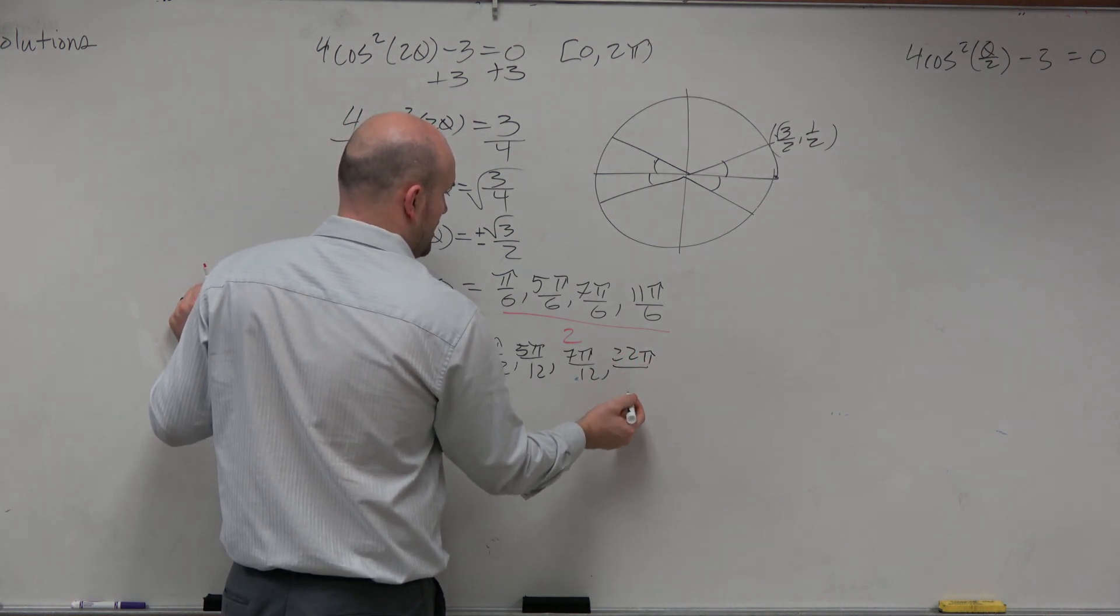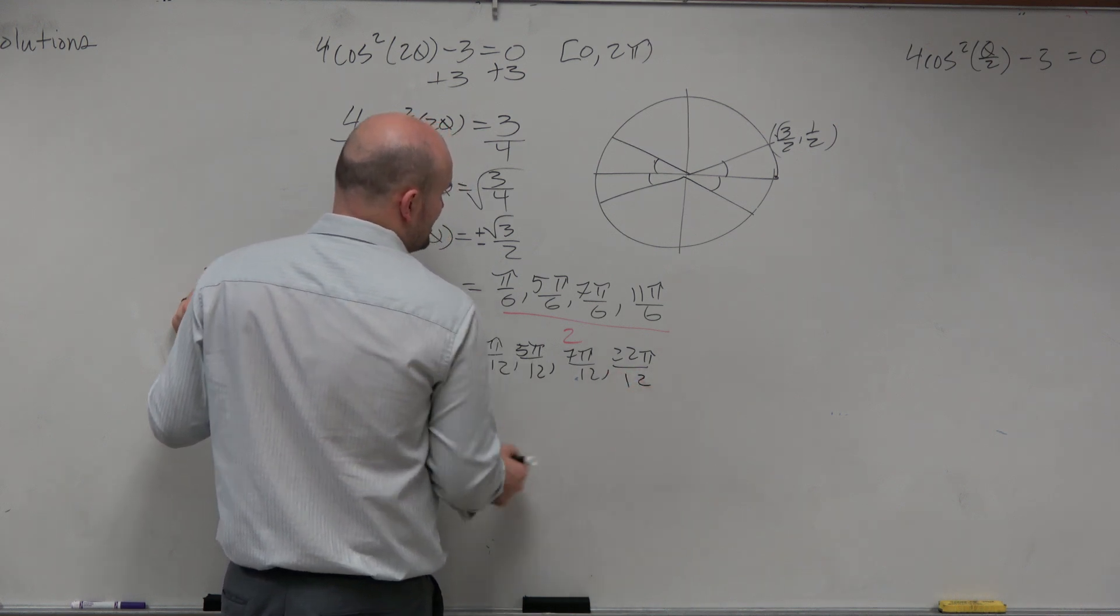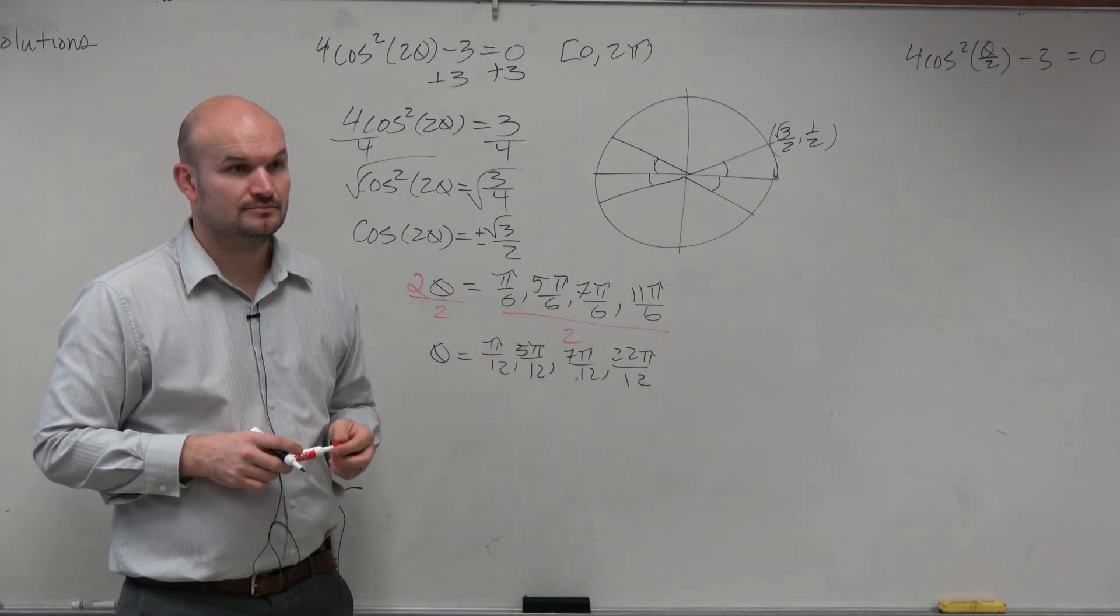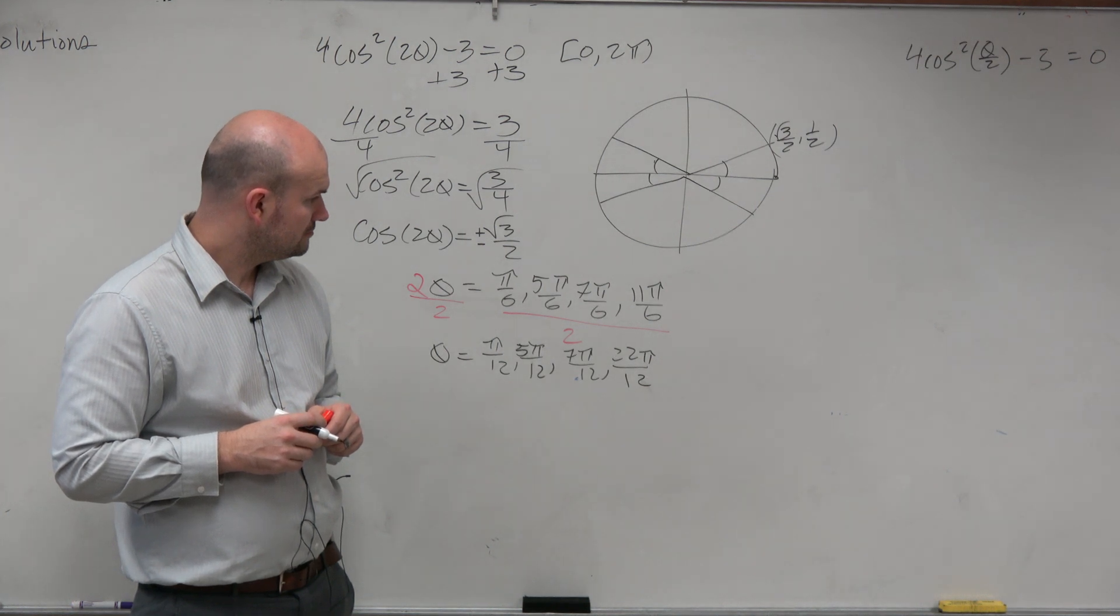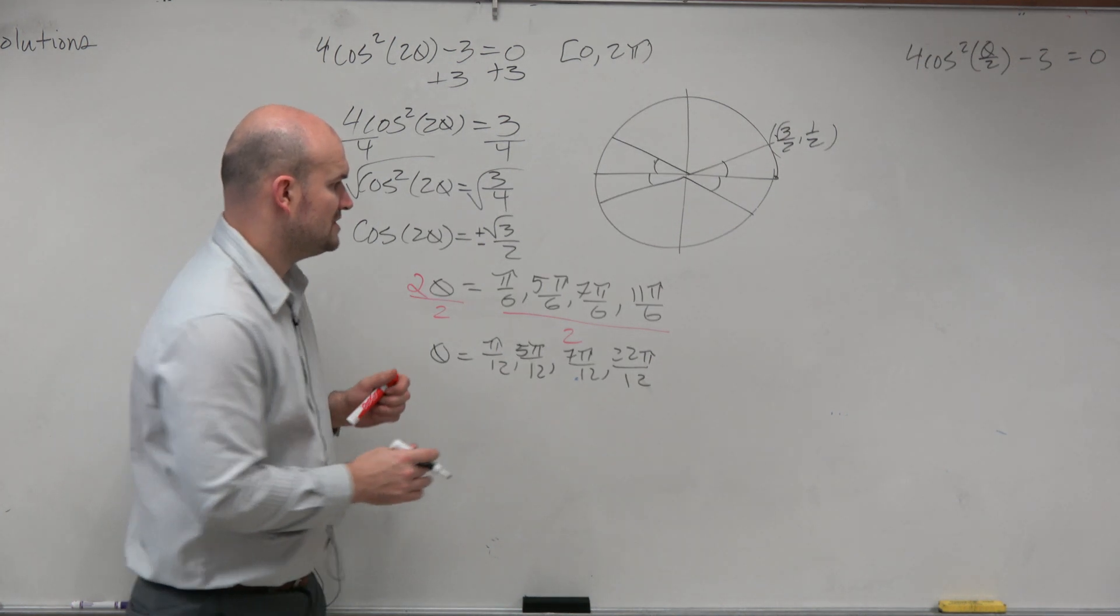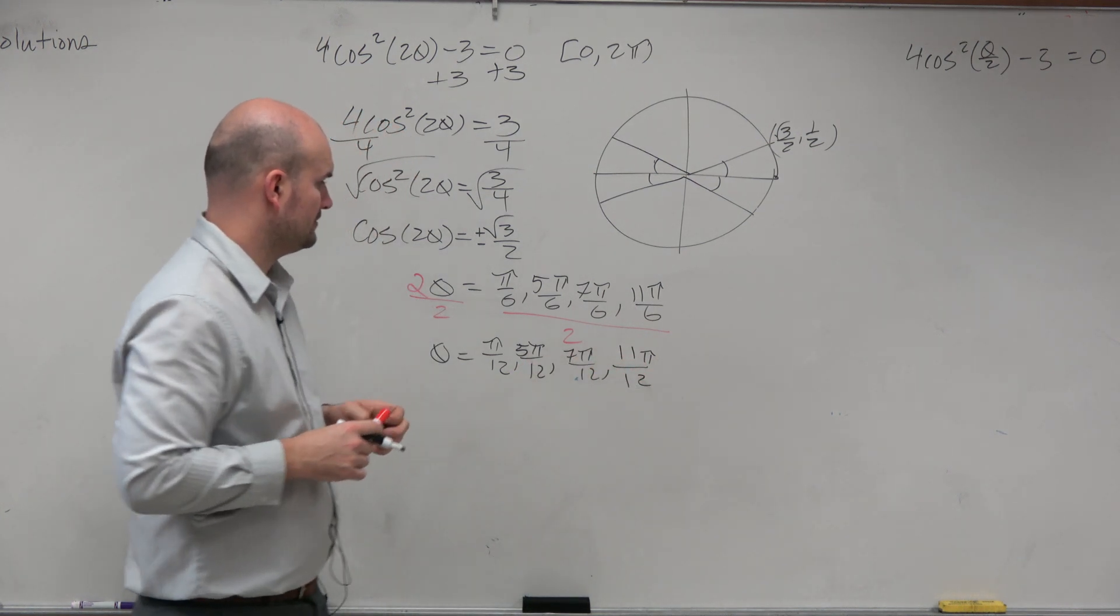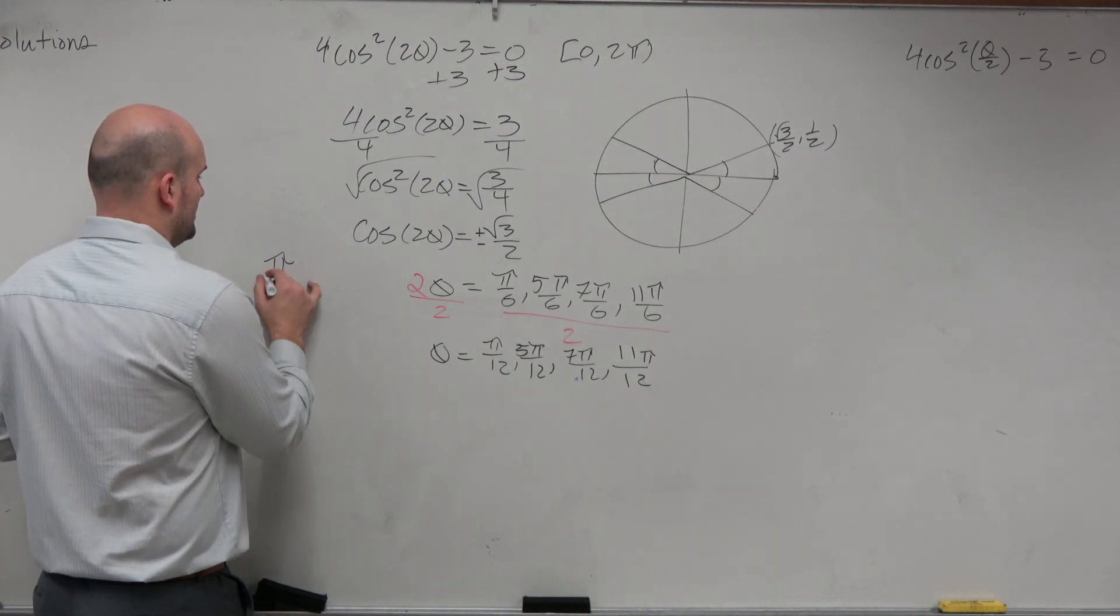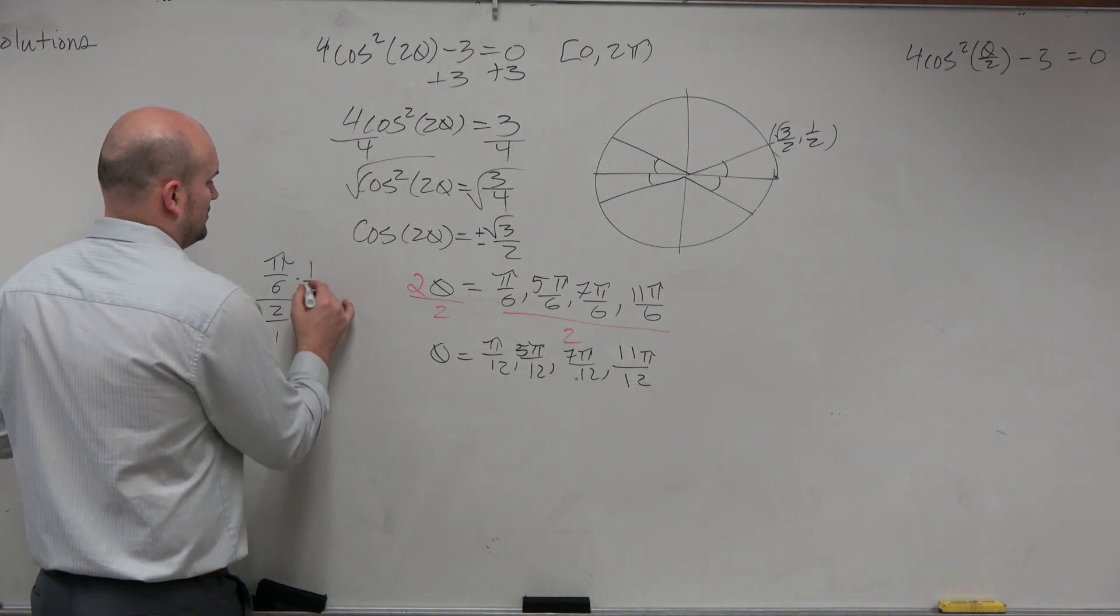And many students would say, OK, I'm good. That's actually easy. I understand it. But the problem is, that's not all the answers. Yes, question? OK, so you went from 11 to 22, but then you go 5 to 10? Sorry, that's supposed to be 11. So just remember, pi over 6 divided by 2 is the same thing as multiplied by the reciprocal.